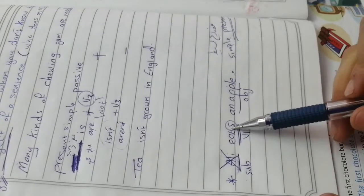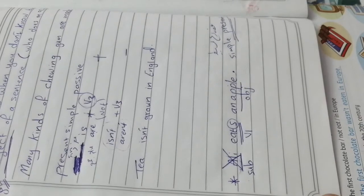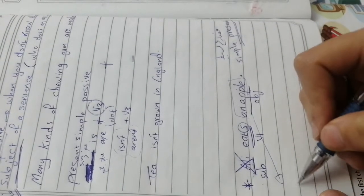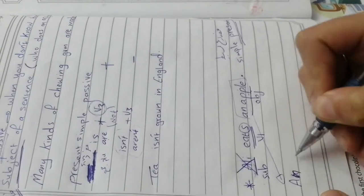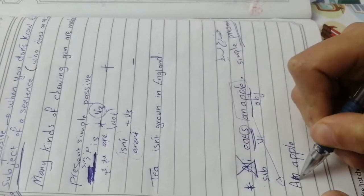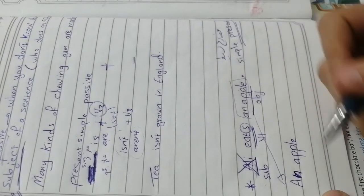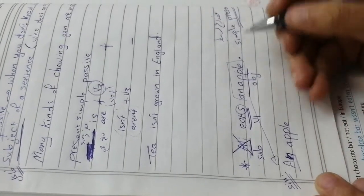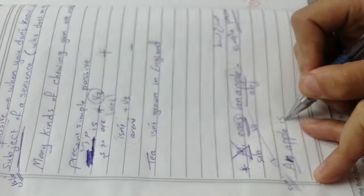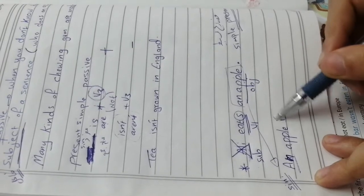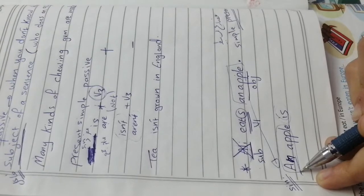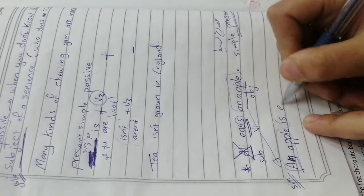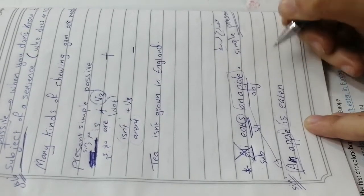نشوف مثلاً هاد المثال: عندي جملة فيها subject verb object. كيف بدي أحول الجملة لل passive؟ أول اشي بدي آخد الـ object وأخليه أول واحد — يعني بدي أحكي an apple. an apple هي singular معناته: an apple is. وال verb eat — شو الـ verb three من eat؟ eaten. معناته: an apple is eaten — التفاحة أوكلت.